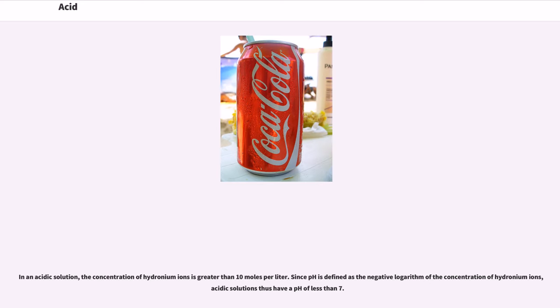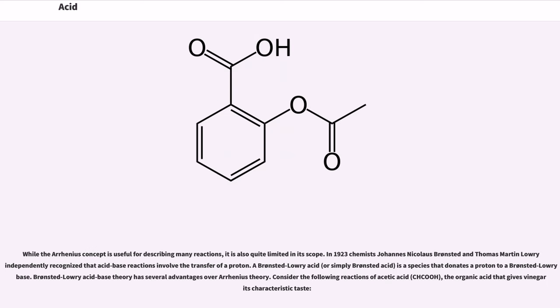In an acidic solution, the concentration of hydronium ions is greater than 10^-7 moles per liter. Since pH is defined as the negative logarithm of the concentration of hydronium ions, acidic solutions thus have a pH of less than 7. While the Arrhenius concept is useful for describing many reactions, it is also quite limited in its scope. In 1923, chemists Johannes Nicolaus Brønsted and Thomas Martin Lowry independently recognized that acid-base reactions involve the transfer of a proton.